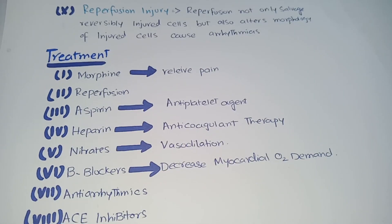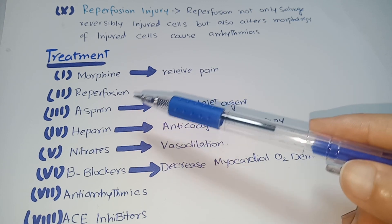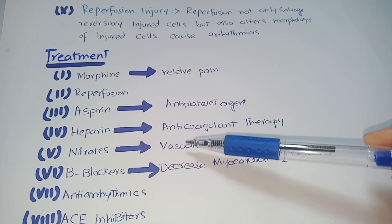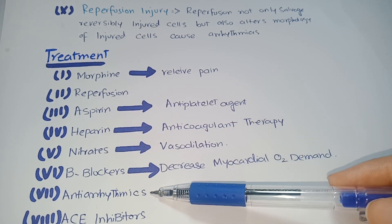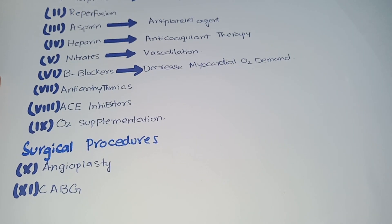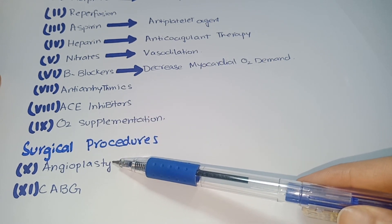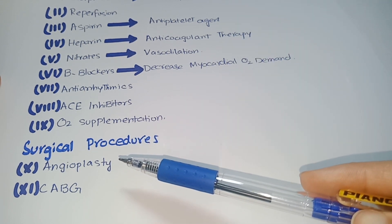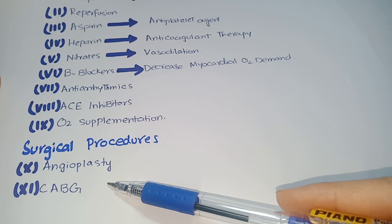Treatment of myocardial infarction includes morphine for pain, reperfusion therapy, aspirin as an antiplatelet, heparin as an anticoagulant, nitrates as vasodilators, and beta blockers to decrease oxygen demand. Antiarrhythmics and ACE inhibitors are also used. If medical treatment fails, surgical procedures are considered: angioplasty, where the lumen of the vessel is opened using a stent, or a bypass procedure using the great saphenous vein to bypass the coronary arteries.